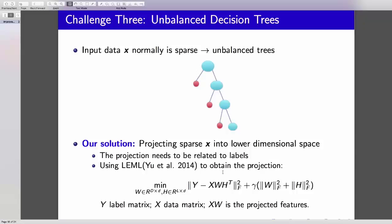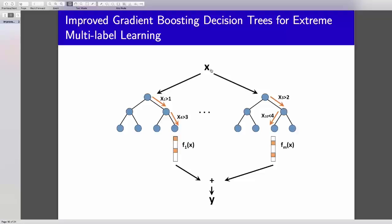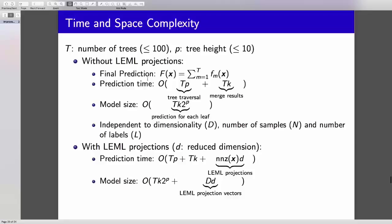In the end, it's our model. You have a given data X, you go to each tree, you traverse the tree. Each one, you just look at one variable, you go left or right. And in the end, you have a K-dimensional sparse, L-dimensional vector, but it's K sparse. You combine all these results to get the prediction. The training time, if you don't use any projection, then the model size and prediction time are independent to L and N and D. If you use the projections, then you will slightly increase the prediction time and model size.